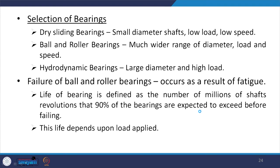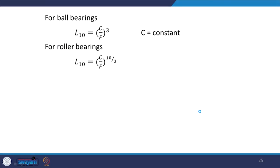Failure of ball and roller bearings occurs due to fatigue. Bearing life (L10 life) is defined as the number of millions of shaft revolutions that 90% of bearings are expected to exceed before failure, and depends on the load applied. For ball bearings, L10 life = (C/F)^3, where C is a constant and F is the load. For roller bearings, L10 life = (C/F)^(10/3).